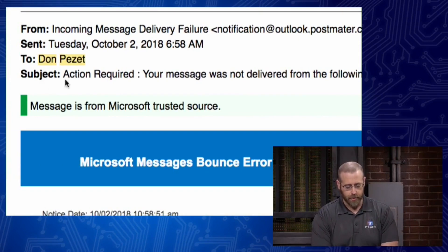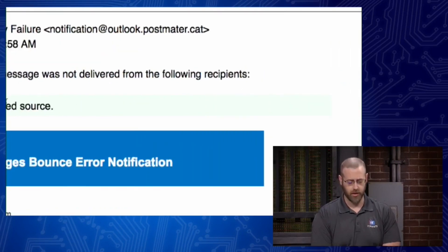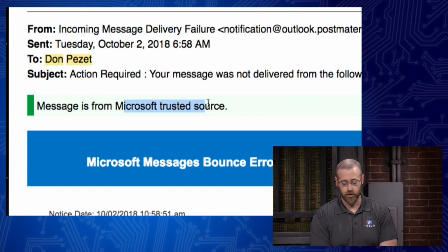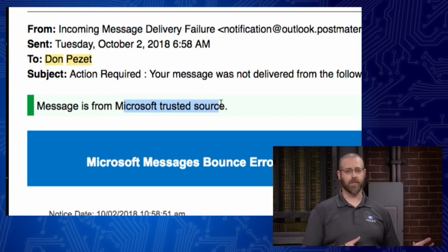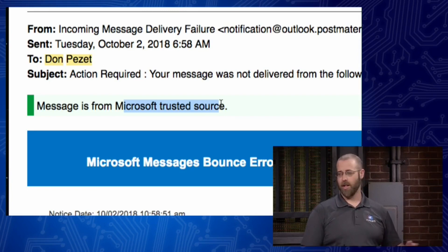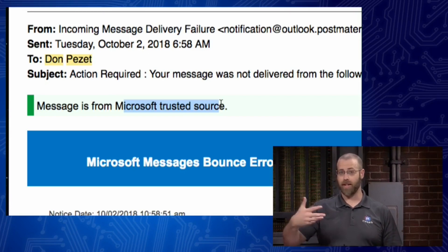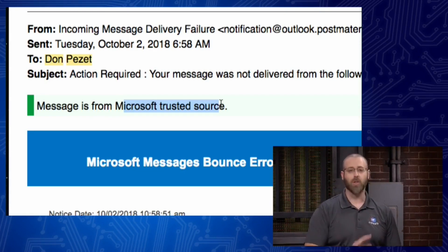The subject says 'Action Required — your message was not delivered from the following recipients,' and then it doesn't give a recipients list. The body says 'Microsoft server is experienced difficulty' — grammatical errors right there. That's another big red flag. Microsoft would never let this get by. It's obvious English is most likely not the phisher's first language. They're throwing in technical jargon like 'domain key error code' to make the user think it's legit.